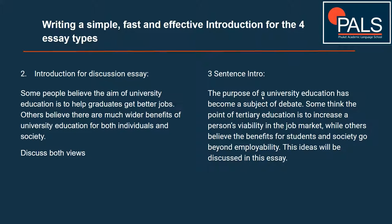'Some think the point of tertiary education' — tertiary is another way to say university — 'is to increase a person's viability in the job market.' That means how viable or how employable they are, how useful they will be in the job market.